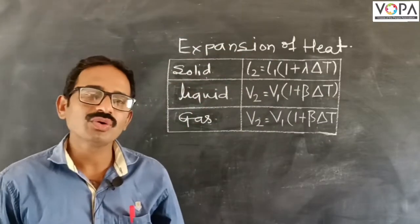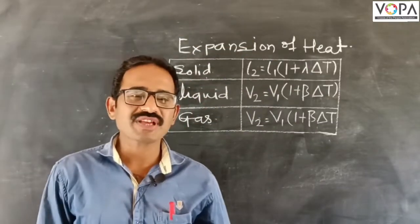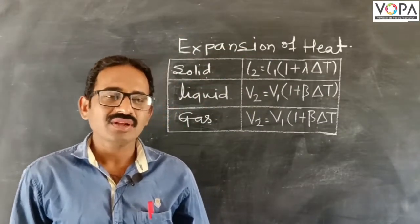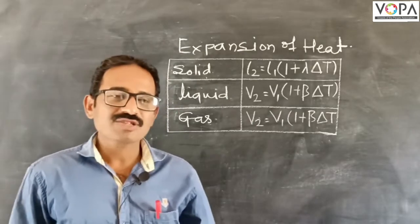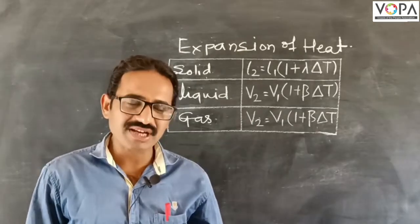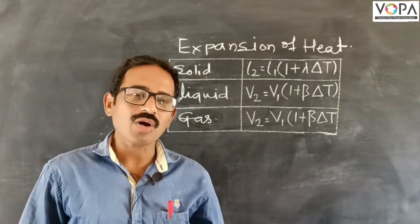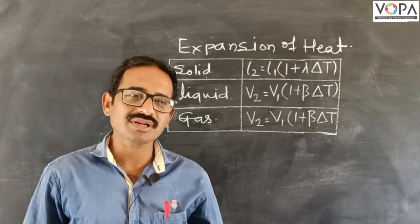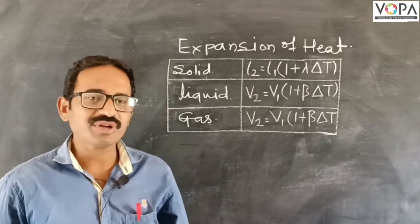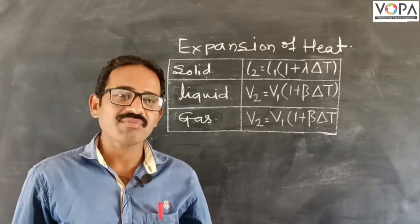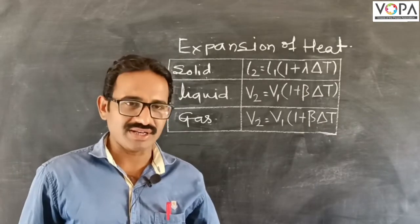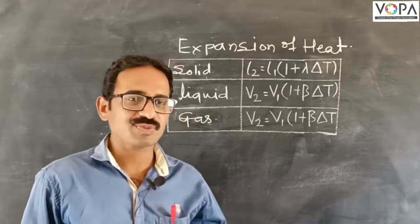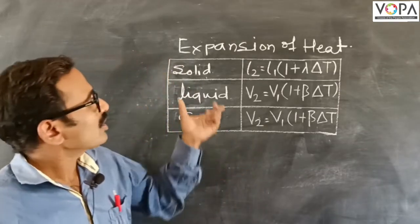Welcome, student. You know specific heat of substances. The specific heat of an object is the amount of heat required to increase the temperature of unit mass of a substance by 1 degree. This is the definition of specific heat.